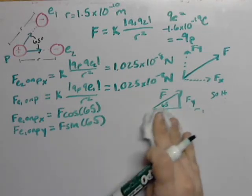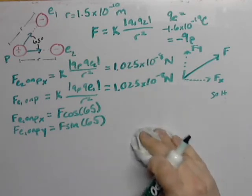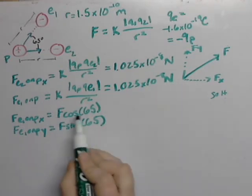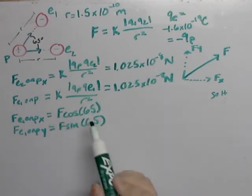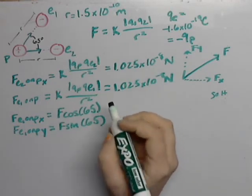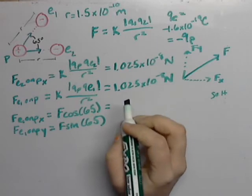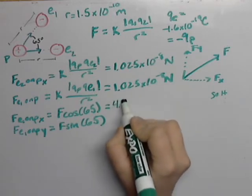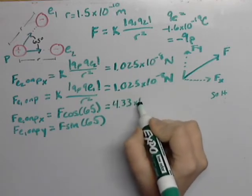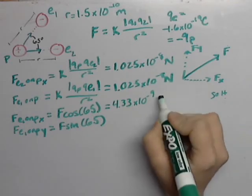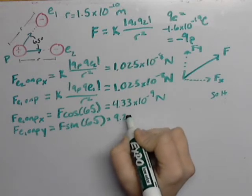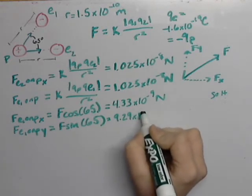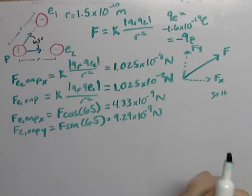I'm going to go ahead and erase this just so we have some room. When you put this in your calculator, you're going to take this value in for f, and you're going to get something along the lines of 4.33 times 10 to the negative ninth newtons and 9.29 times 10 to the negative ninth newtons.